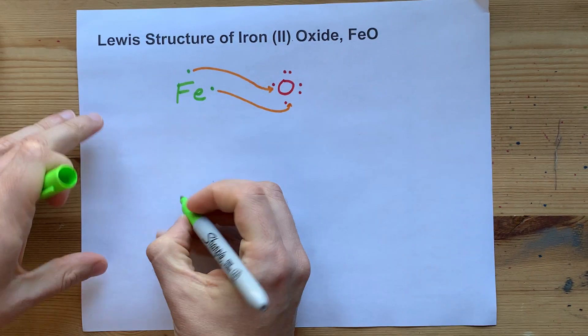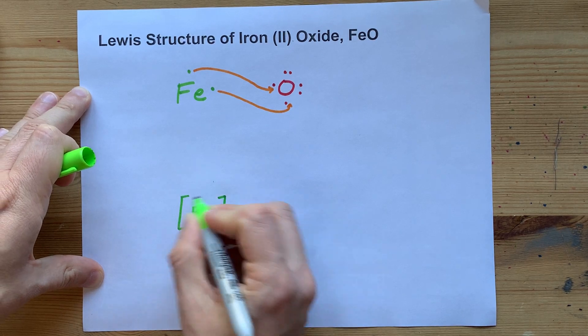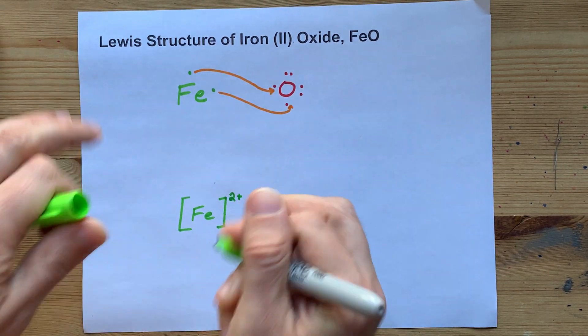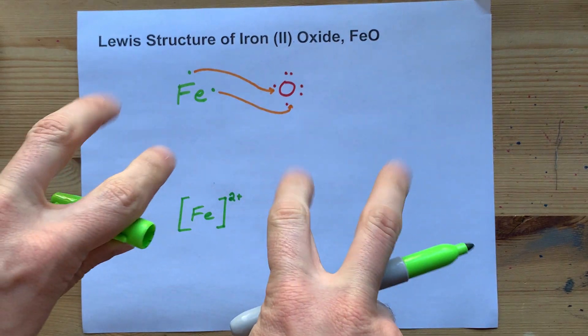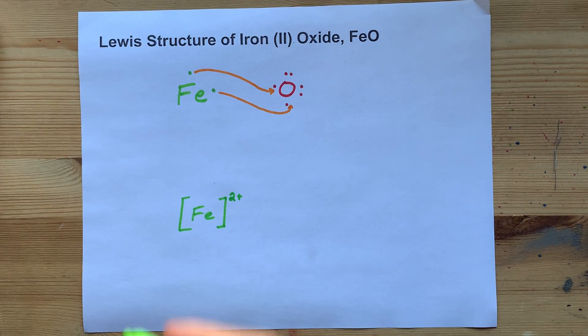What you end up with is an iron atom, Fe, with no electrons left in its valence shell. That means that the outer shell on this iron is the next one in, which is full by definition. So he's happy and stable.